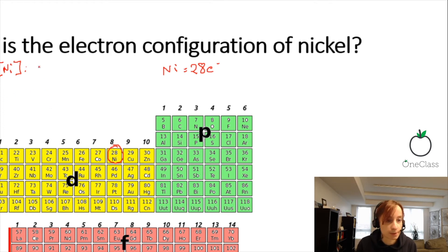This row here is 1s. So 1, 2, 3, 4, this is 2s. Moving over here, this is 2p.